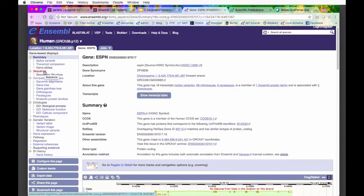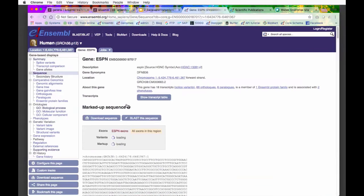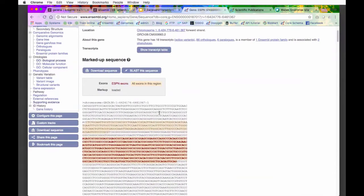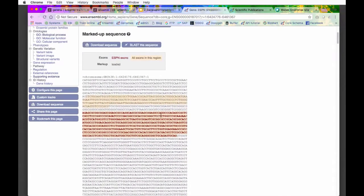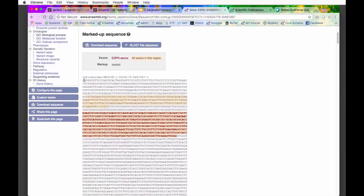I'm going to explore some of these links over on the left. The first one I'm going to go to is sequence. Here we can see the sequence of the gene. We can see 600 bases upstream. Then we have the first exon of the gene. The exons are highlighted in this peachy color.